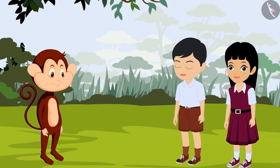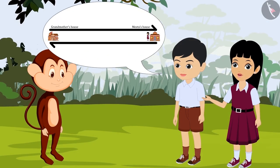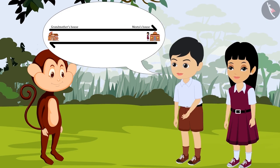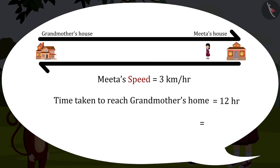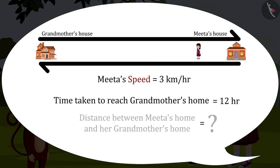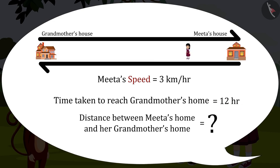Bholu monkey, suppose I am walking down to my grandmother's house with 5 boxes of sweets. Meeta's speed is 3km per hour and she took 12 hours to reach grandmother's home. So can you tell how far is Meeta's house from her grandmother's house?